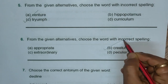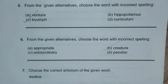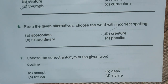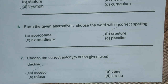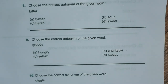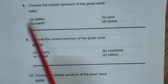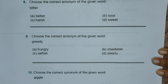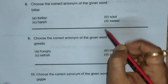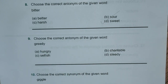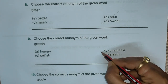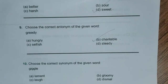Question seven: choose the antonym for the given word. We are looking for the opposite. The opposite of 'decline' is 'acceptance,' hence that is the right answer. Question eight: the correct antonym for 'bitter' is 'sweet,' so that option is the right answer. Question nine: choose the correct antonym for 'greedy' — the opposite of greedy is 'charitable,' which is in option B, hence B is the right answer.